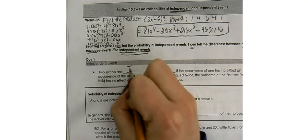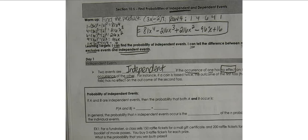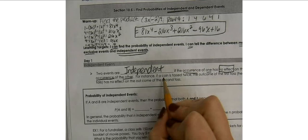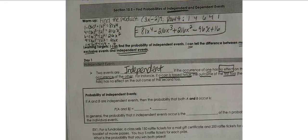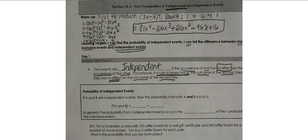So what is an independent event? Two events are called independent if the occurrence of one event has no effect on the occurrence of the other. An example of that would be if a coin is tossed twice — the outcome of the first toss, whether it's a head or a tail, has absolutely no effect on whether the second toss will give us a head or a tail. Each event is independent of one another.